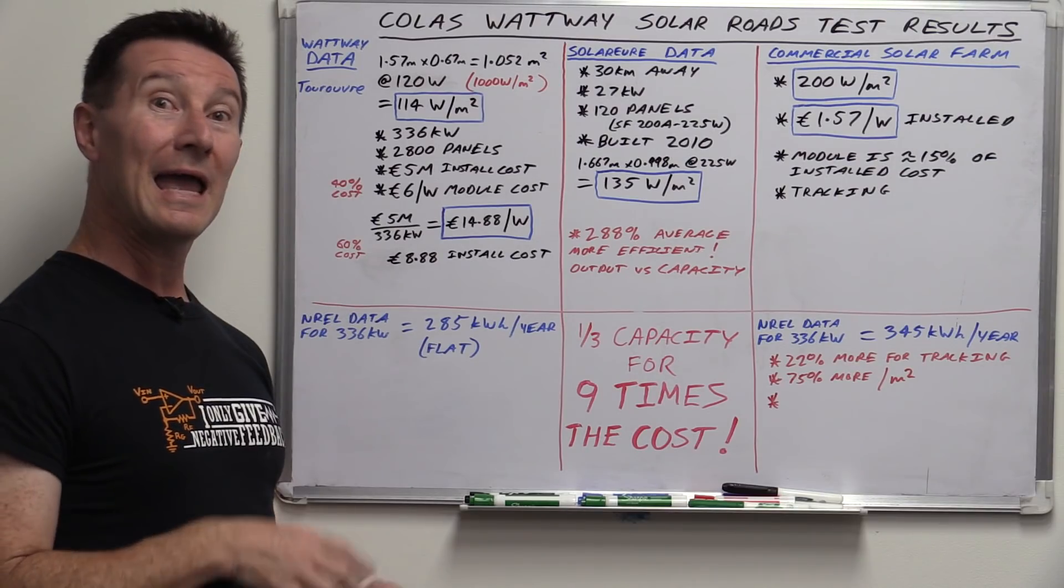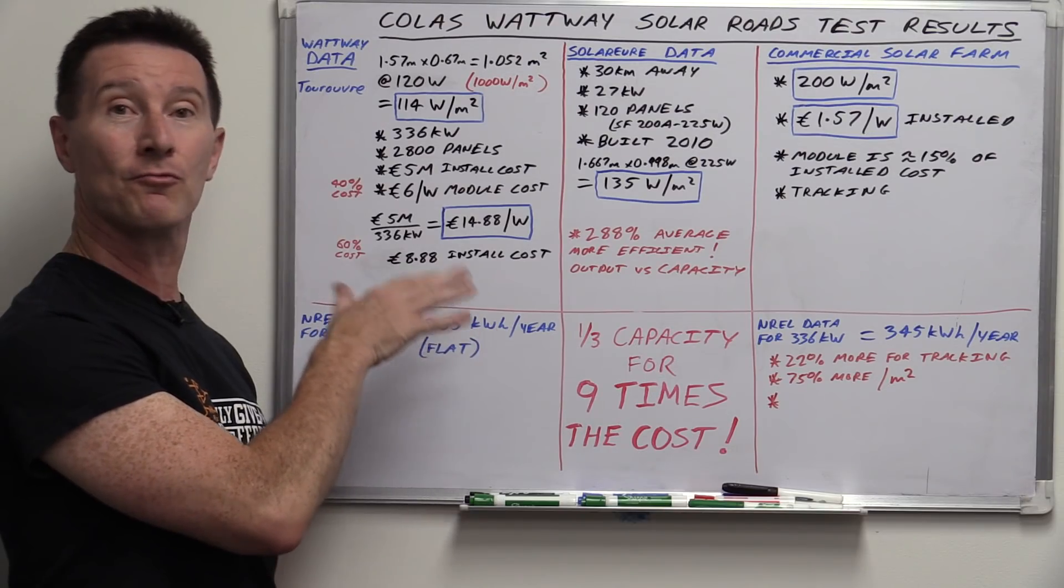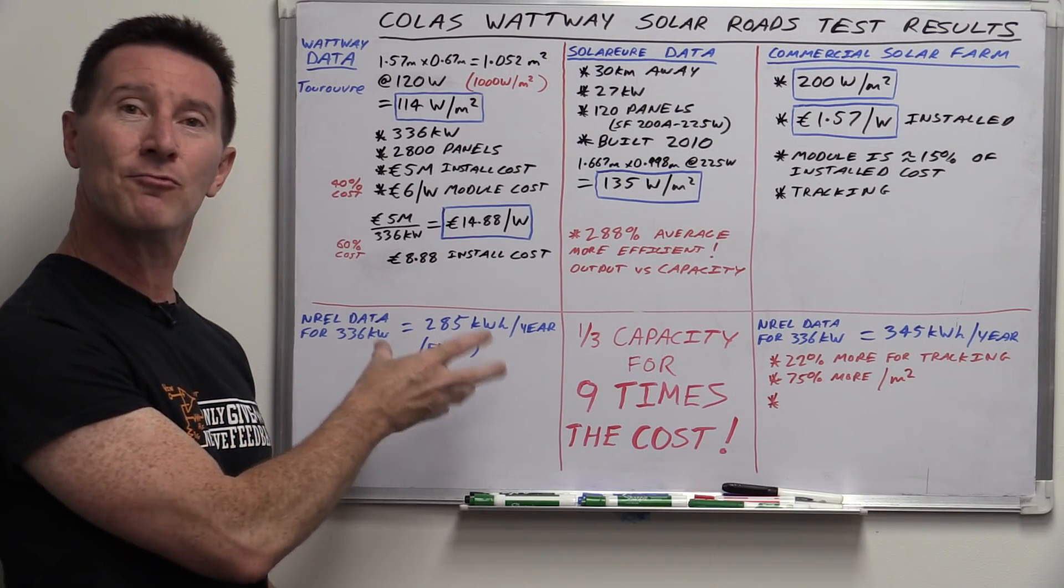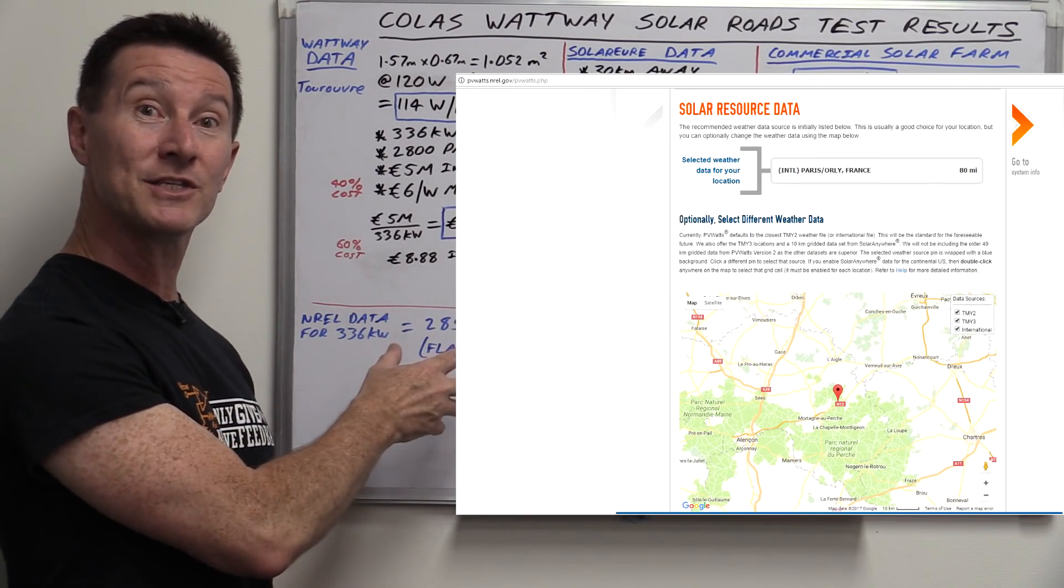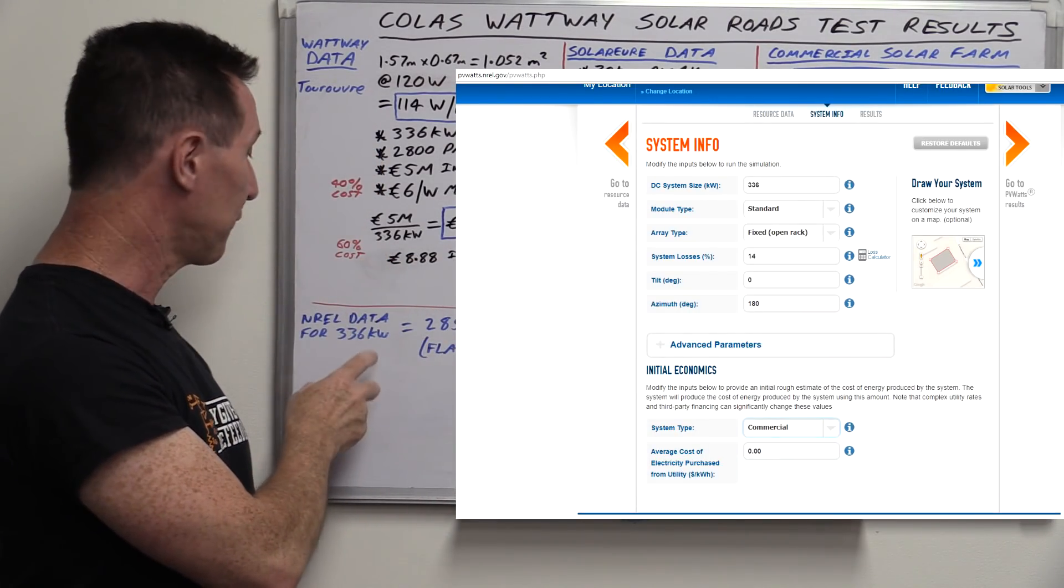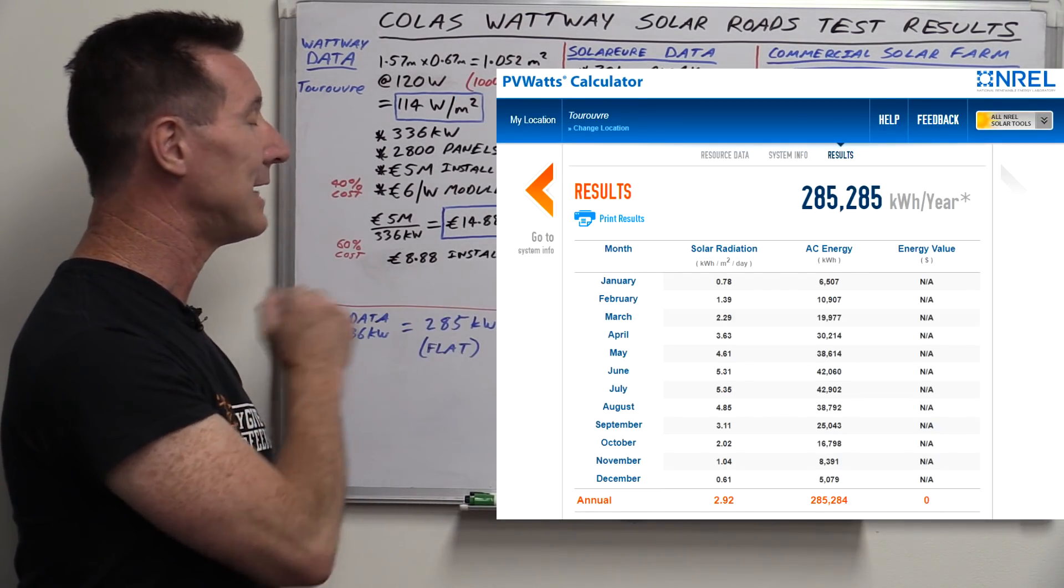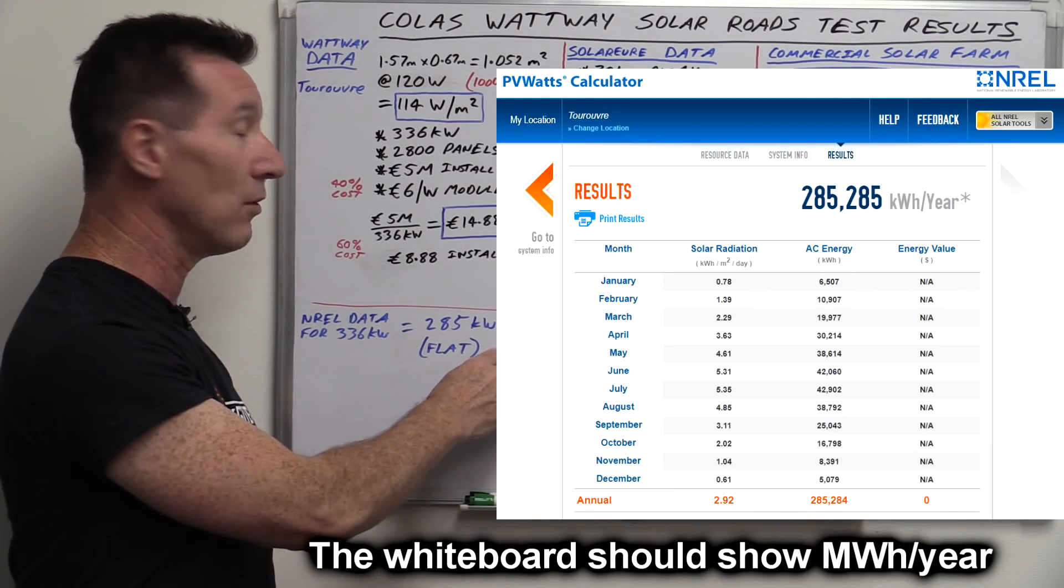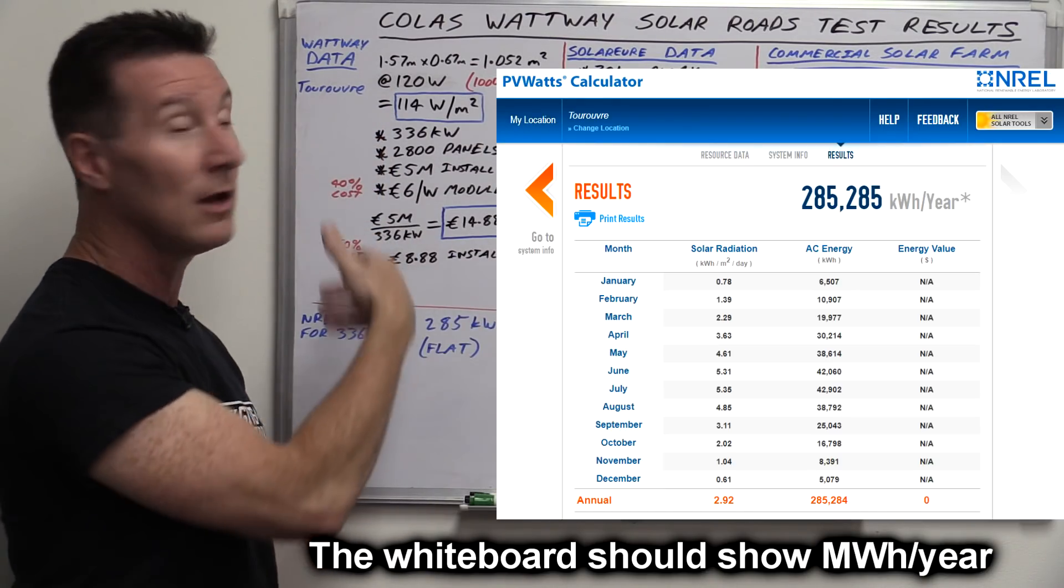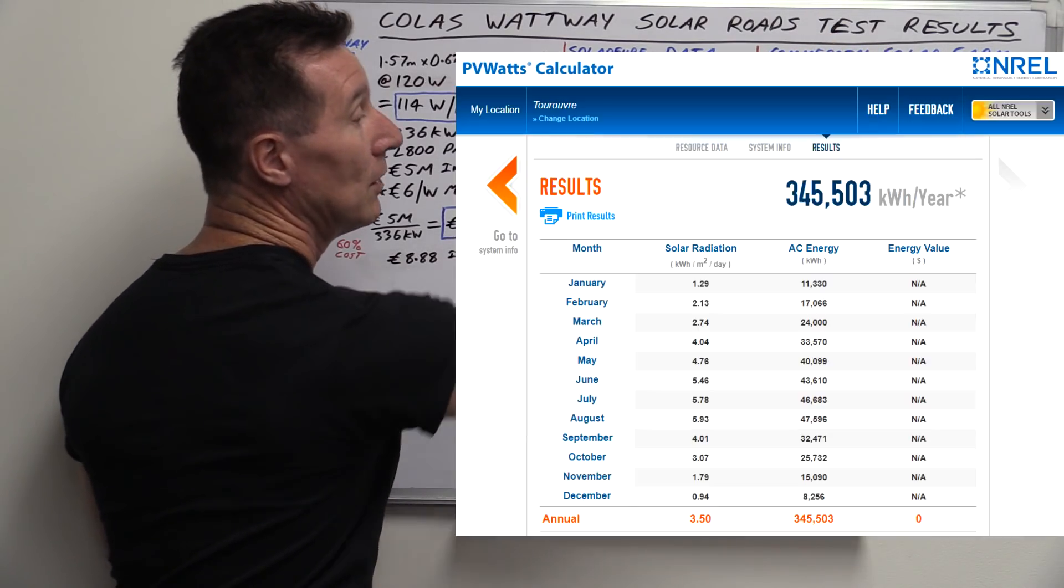And on top of that, if you actually look at the National Renewable Energy Lab, they've got really cool reports and everything. This is a US government thing, which I've used in previous videos. If you actually run the numbers on a real installation at this location in Therouve, in France for a 336 kilowatt system, when you actually lay them flat, it's 288 kilowatt hours per year. That's real sort of estimated data based on the solar irradiation at that particular location over the whole year. They've got data on this sort of stuff. But if you have a commercial solar farm,